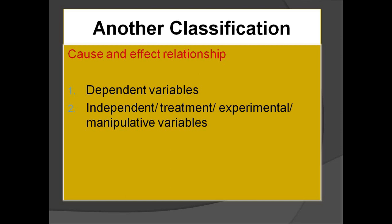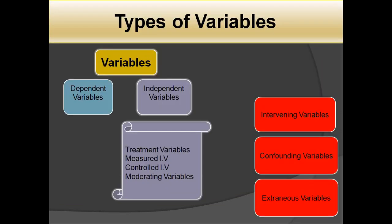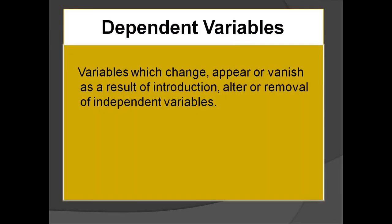Another classification is based on cause and effect relationship, which we normally use in research studies. The first type is dependent variables and the second is independent variables. Independent variables are also called treatment variables, experimental variables, or manipulative variables. We have variables in two broad types — dependent and independent — and independent variables are further categorized into four types: treatment variables, measured independent variables, controlled independent variables, and moderating variables. We also have intervening variables, confounding variables, and extraneous variables.